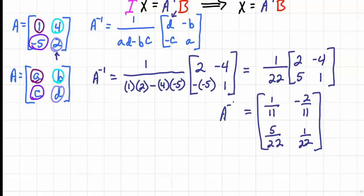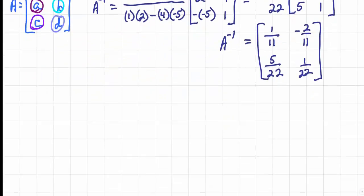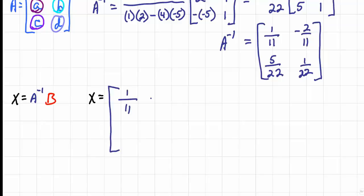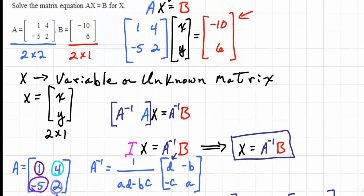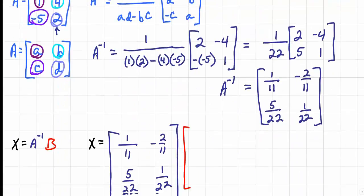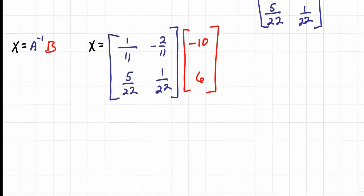Now that we know A inverse, we return to X equals A inverse times B. Matrix X is a 2 by 1 matrix, multiplied by the 2 by 2 matrix A inverse. Scrolling back up, matrix B has negative 10 in the first row and 6 in the second row of column 1.